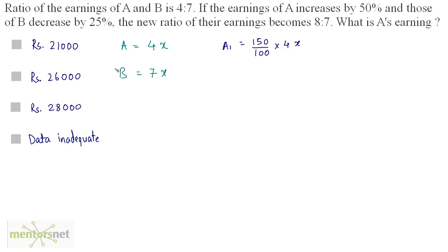B's salary decreases by 25%. So I can write B1, the new salary of B, as equal to 100 minus 25% of 7x, which is 75% of 7x — so 75 by 100 times 7x.